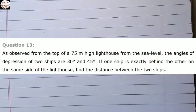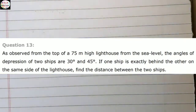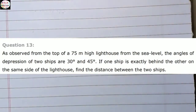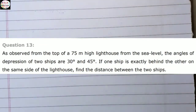Everybody, this is Rahul and welcome to Color Again YouTube channel. Today we will do Class 10 NCERT Math Exercise 9.1, Question Number 13: As observed from the top of a 75-meter high lighthouse from the sea level, the angles of depression of two ships are 30 degrees and 45 degrees. If one ship is exactly behind the other on the same side of the lighthouse, find the distance between the two ships.